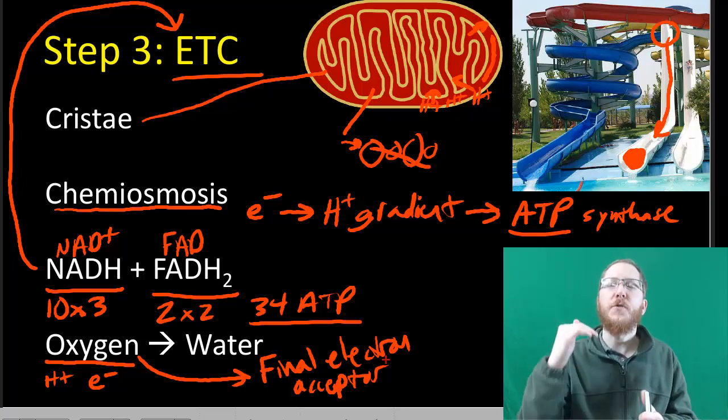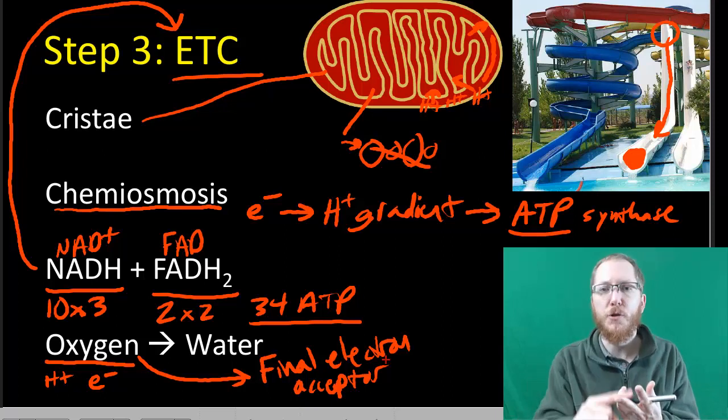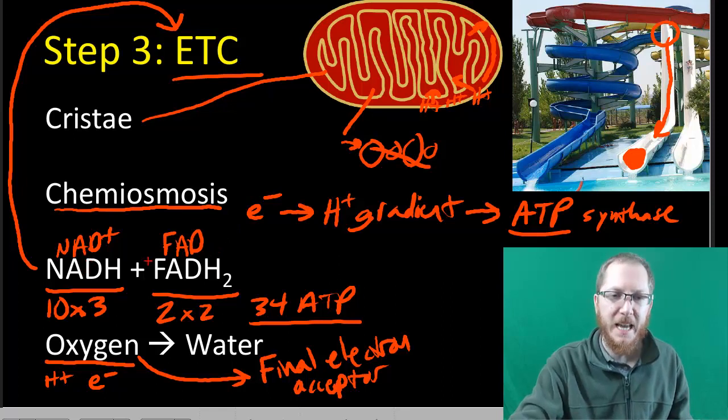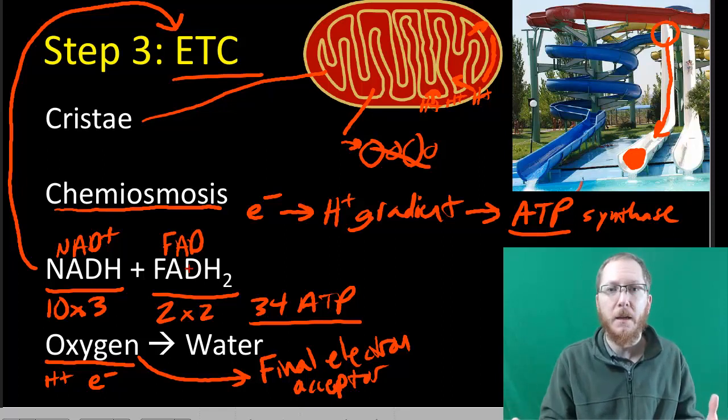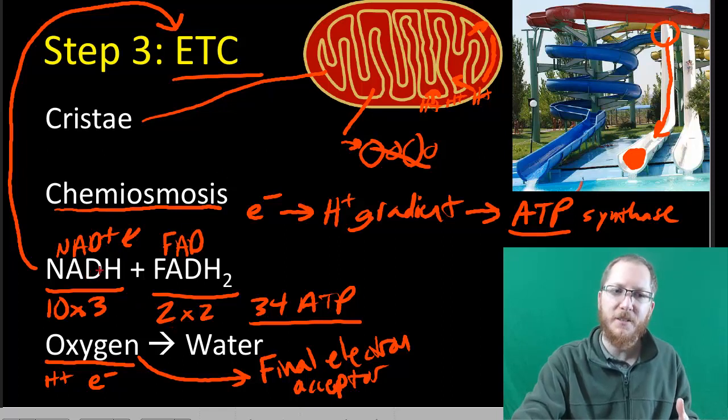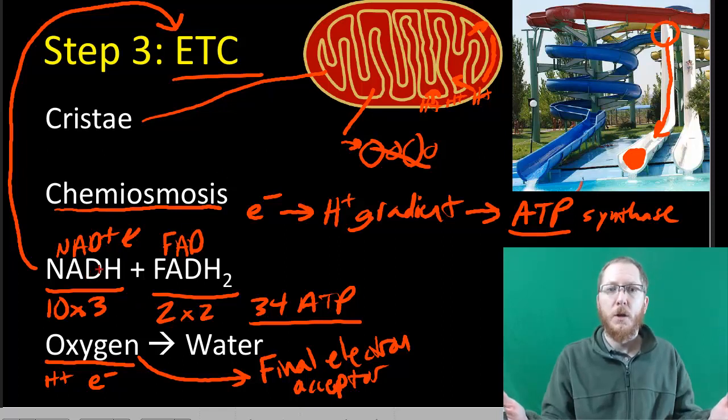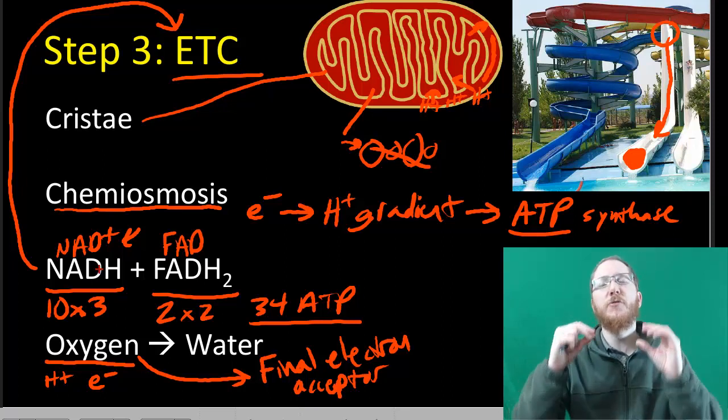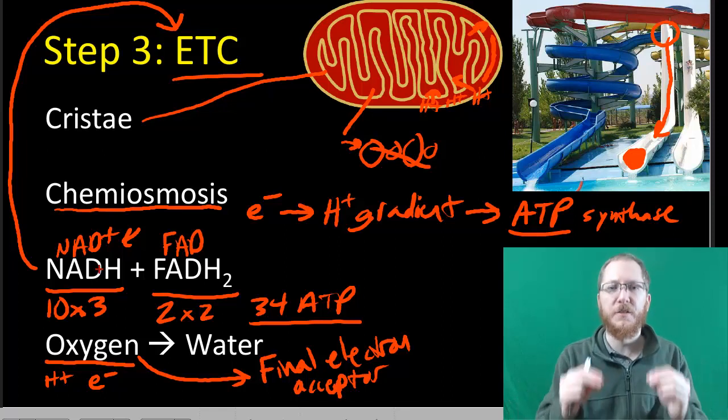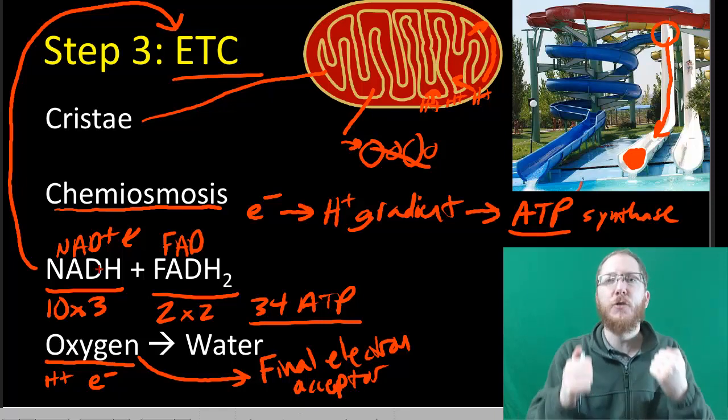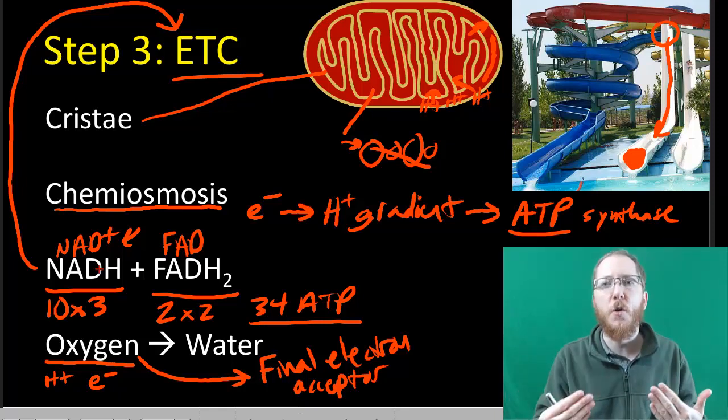That somebody is oxygen. Oxygen is going to grab some H+ and grab the electrons from the end of this chain, and make water. Oxygen is normally referred to as the final electron acceptor. If you run out of oxygen, that electron just sits there and the electron transport chain shuts down. This is why if you don't have oxygen, we can't do the ETC and we don't do Krebs.